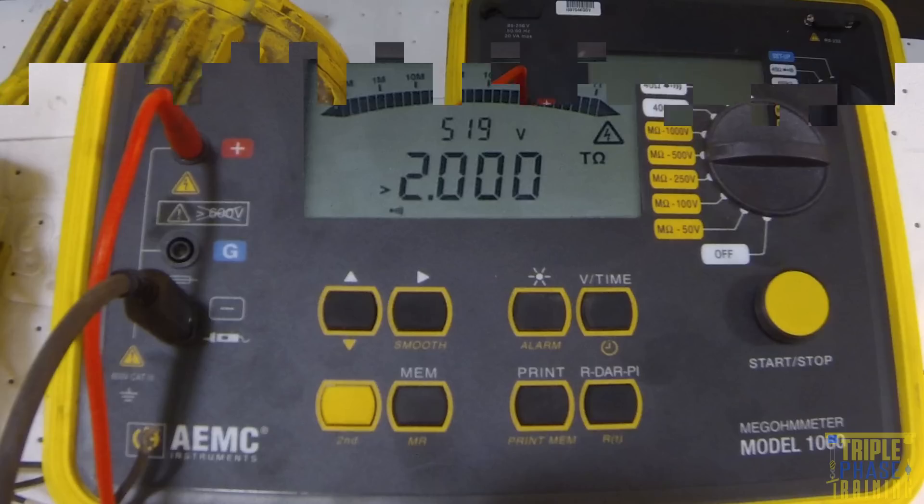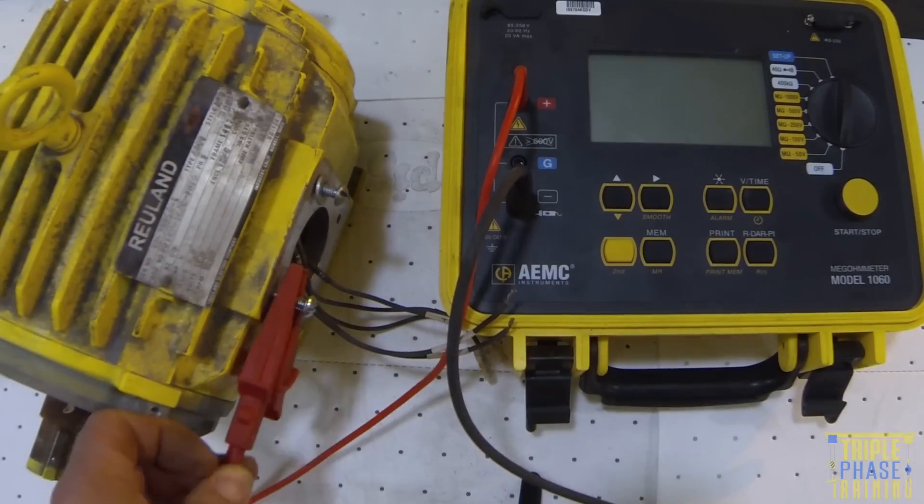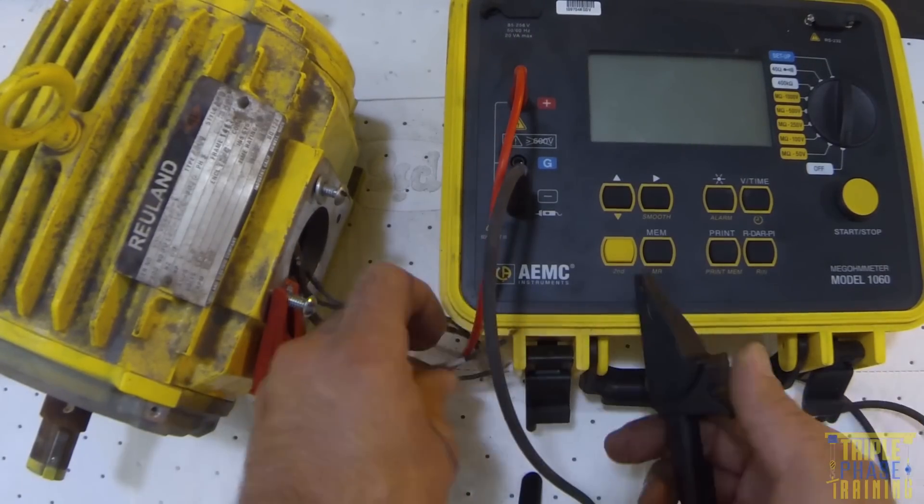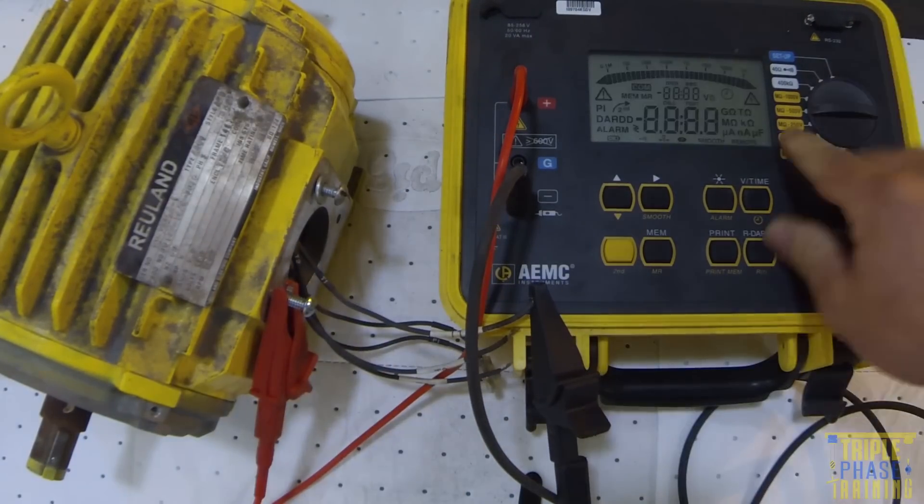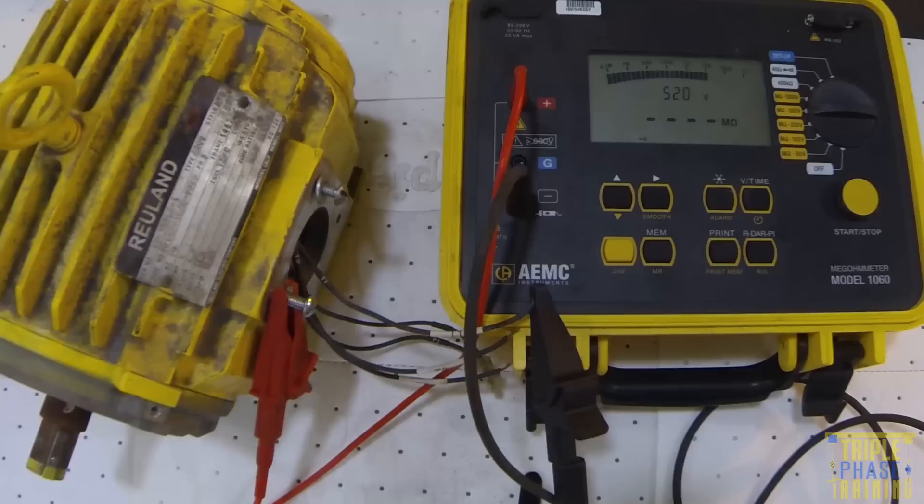Now we will perform the test on the motor taken out of service. Follow the same testing procedures and attach the leads to the correct locations. The positive lead is connected to the casing and the negative lead is connected to the motor lead. The result is displayed as 128 giga ohms and continues to drop to 25 giga ohms. 25 billion ohms is a lot of resistance. However, it is not enough. This motor has insulation damage and should be replaced.